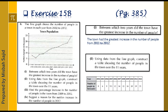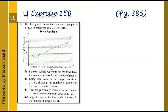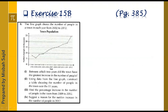Now for part 3: find the percentage increase in the number of people in the town from 2009 to 2012. The number of people in 2009 is 16,000, and in 2012 it is 25,000. We use the percentage increase formula: change divided by old value, multiplied by 100.